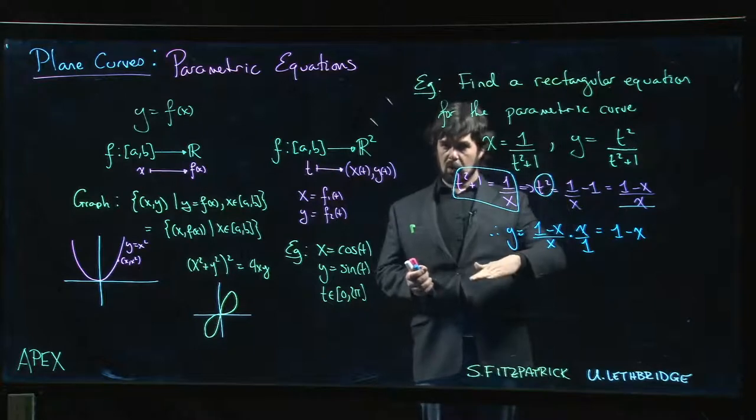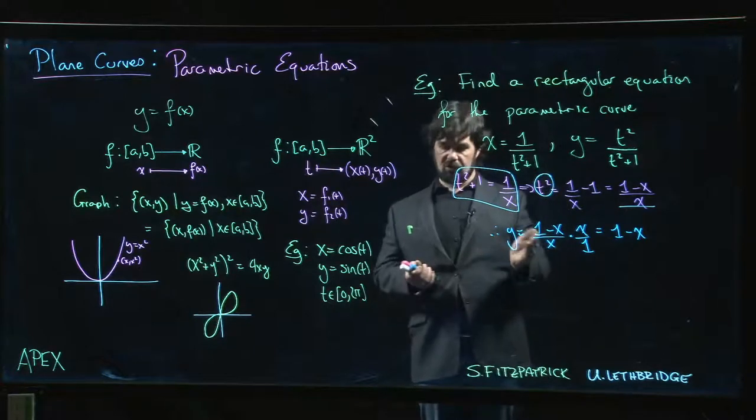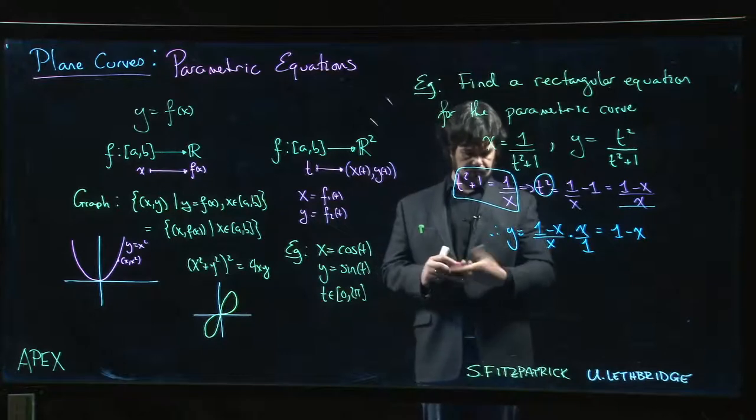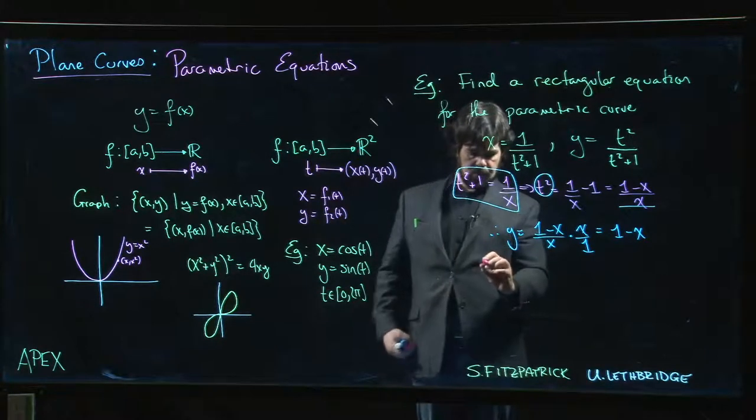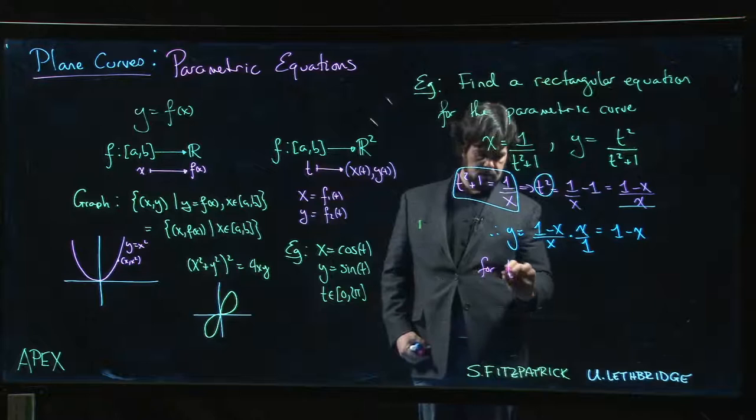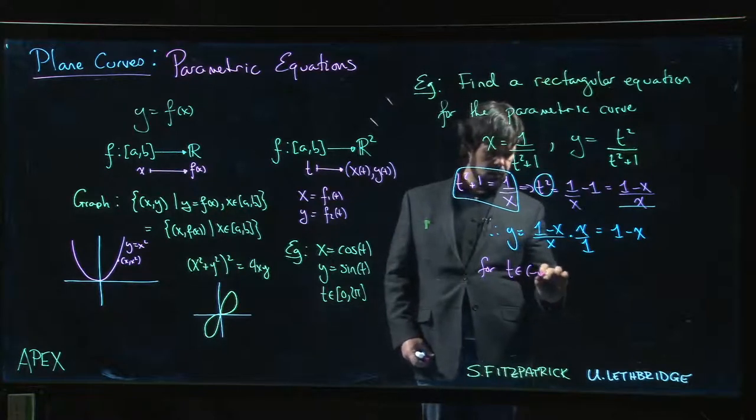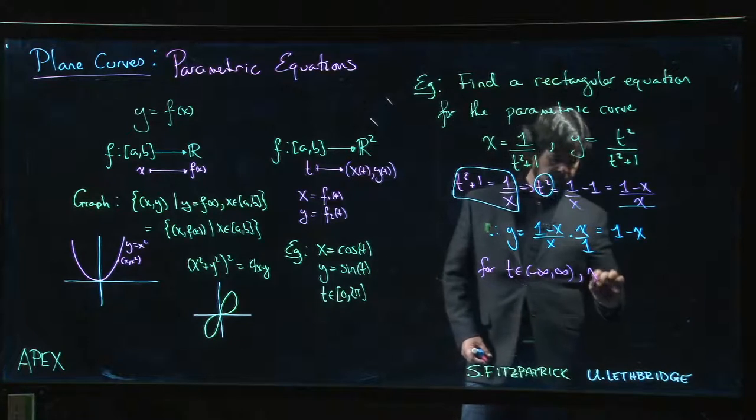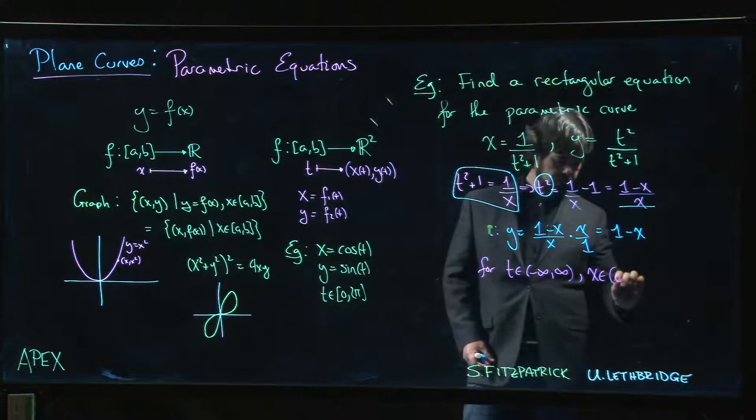So the maximum for x is 1, lower bound for x is 0 but we don't reach it, so it's not a minimum. Notice that for t anywhere between minus infinity and infinity, x is going to be between 0 and 1 but not including 0.